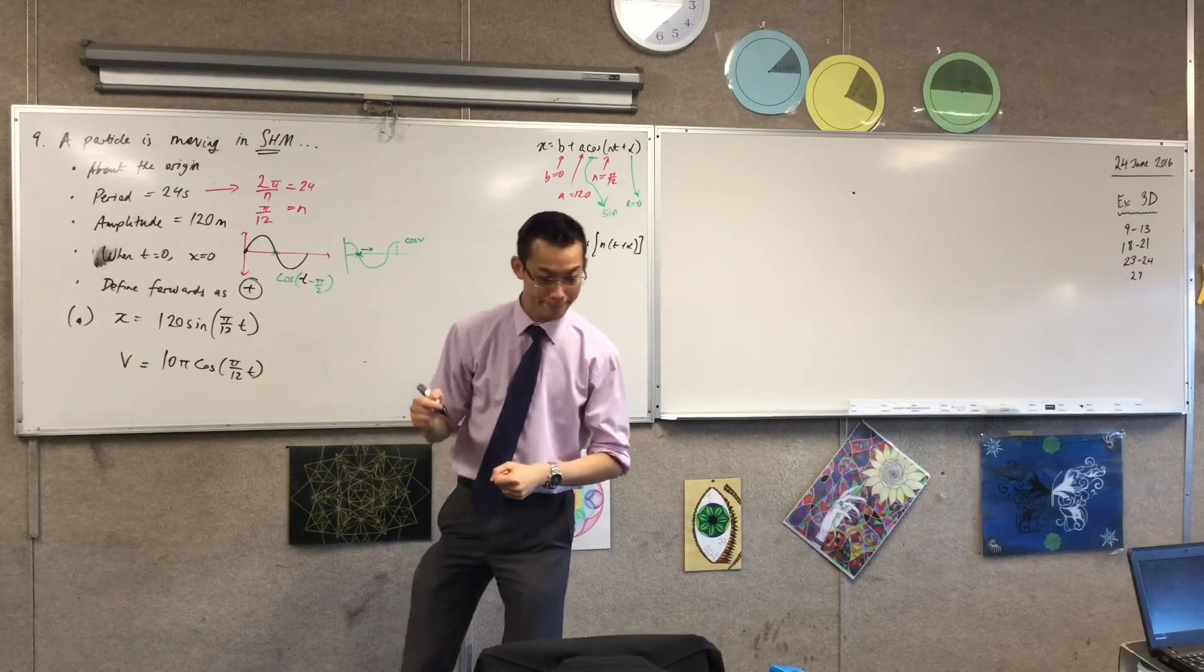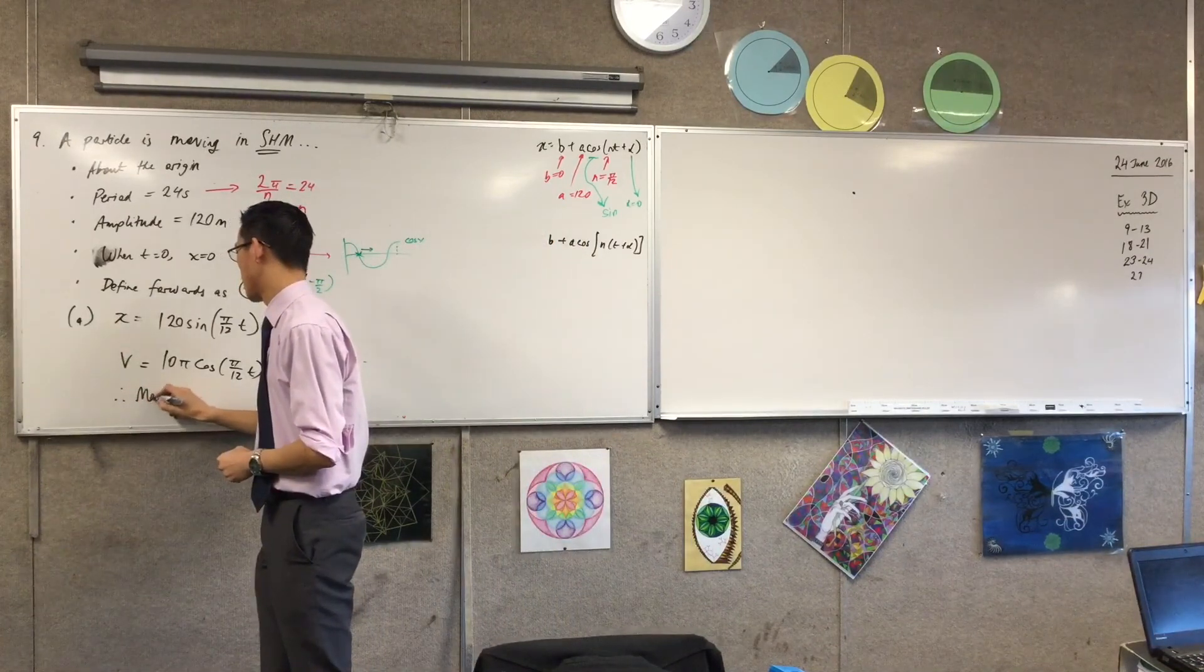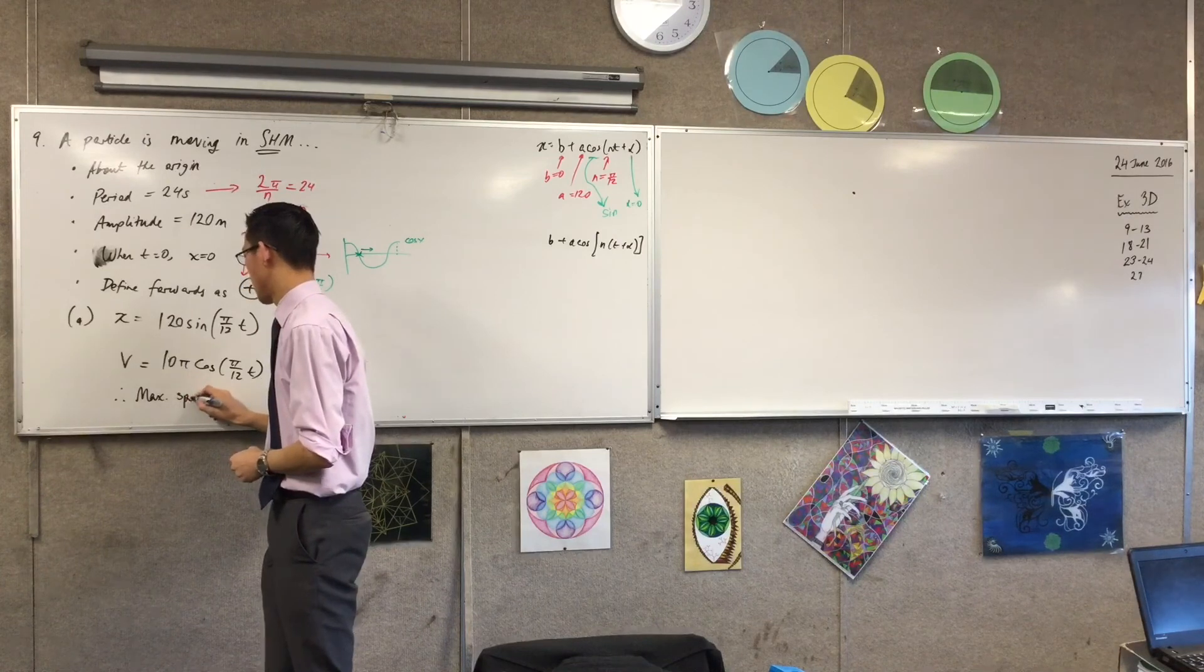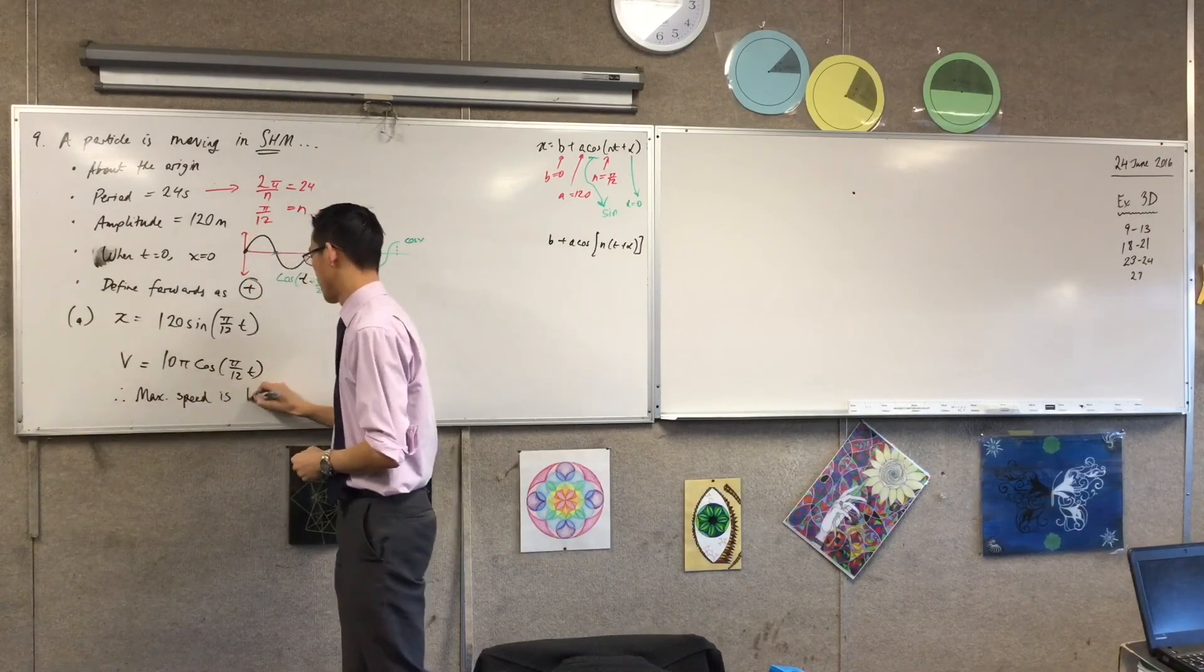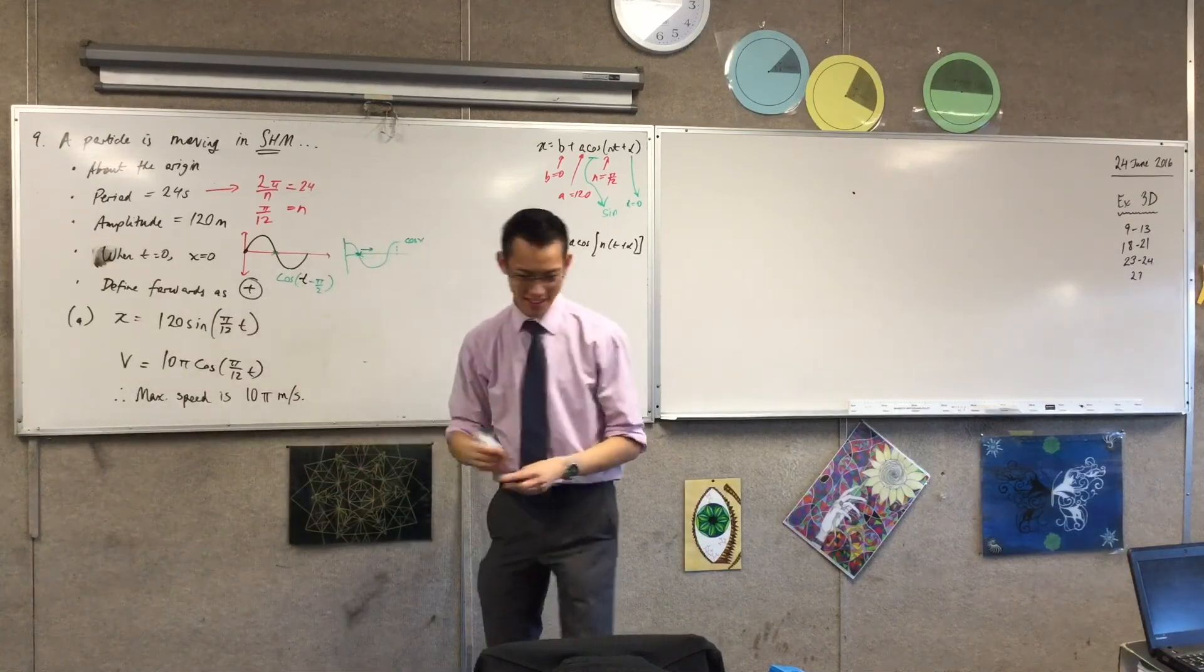10 pi what? Minutes. Minutes per second. Very good. Oh, Dennis. What happened? I think it's actually wrong with the pi. Yes, those pesky pi's. That's right. Thank you.